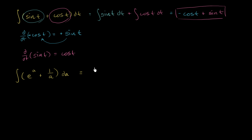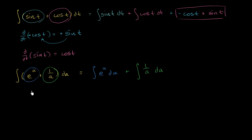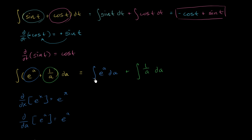We can rewrite it as the sum of integrals: the indefinite integral of e to the a dA, plus the indefinite integral of 1 over a dA. What is the antiderivative of e to the a? We already know that the derivative with respect to x of e to the x is equal to e to the x — that's one of the reasons why e and the exponential function is so amazing. Replacing x with a, the derivative with respect to a of e to the a is e to the a. So the antiderivative of e to the a is e to the a.